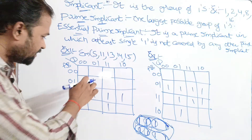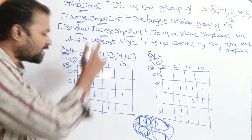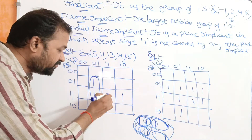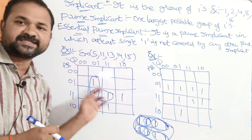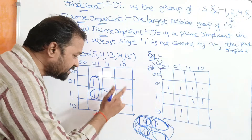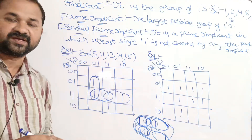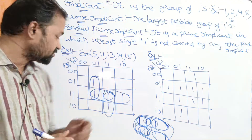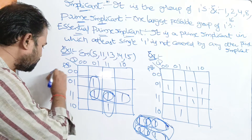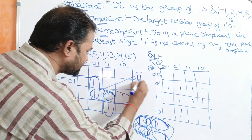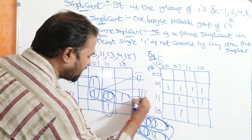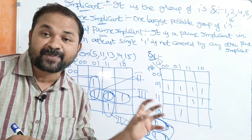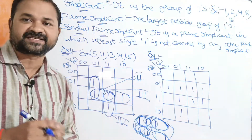Let's see an example. In order to cover this one, the largest possible group is this group. Next, in order to cover this one, we can use this group — this is the largest possible group. Next, in order to cover this one, this is the largest possible group. In order to cover this one, this is the largest possible group. So here we have four Prime Implicants — first group, second group, third group, and fourth group.